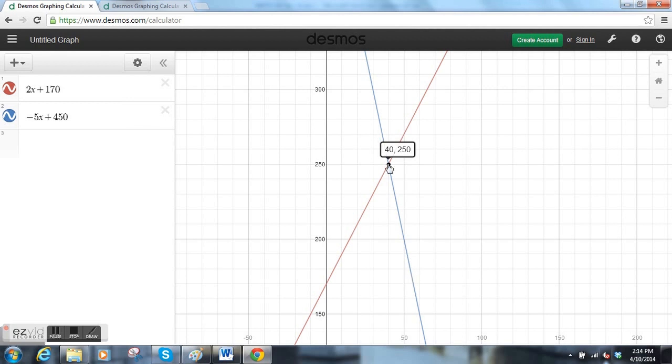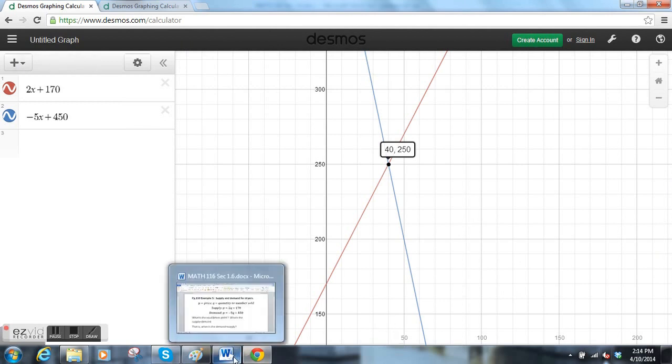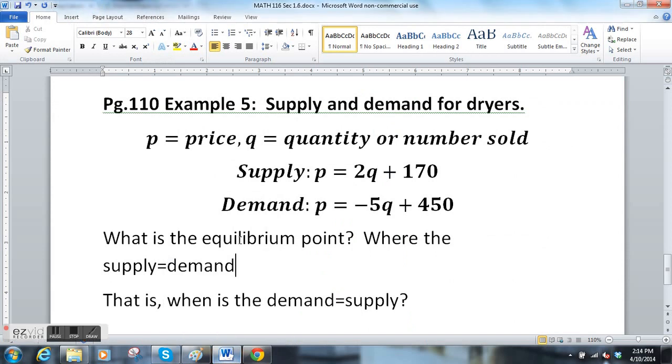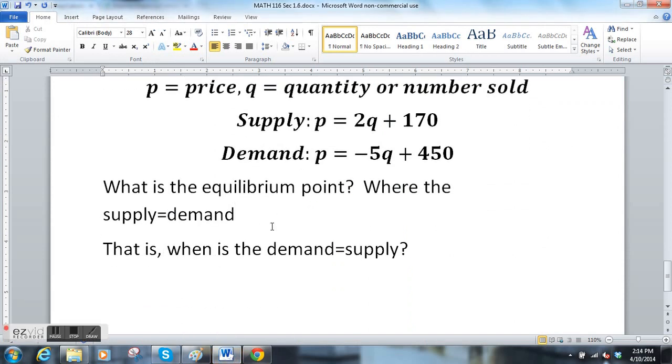The blue line is the demand function, red is supply. So as the supply goes up, demand is going down. As the demand goes up, supply goes down because nobody wants something if it's plentiful. Isn't that the sad truth in life? If it's plentiful, you don't want to pay as much for it. Hopefully this will help you answer these questions. Keep me posted if you have other specific questions on the homework, and good luck with this section.